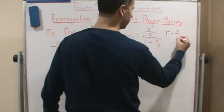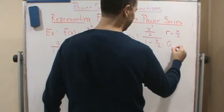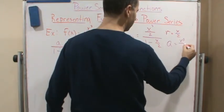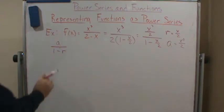r equals x over 2, and then a equals x cubed over 2. So now...